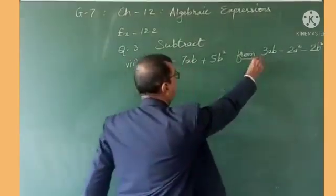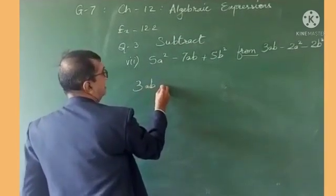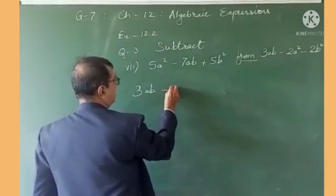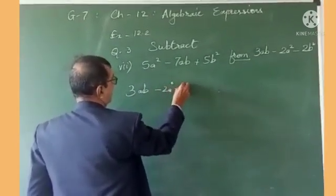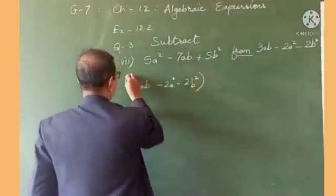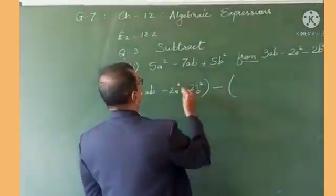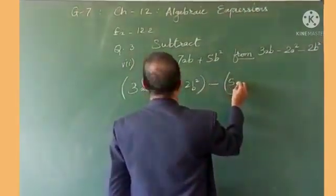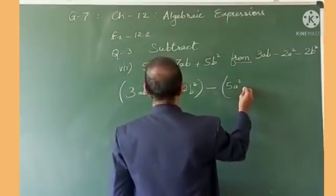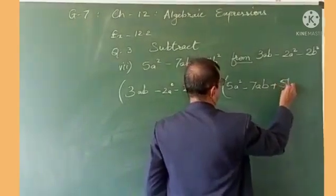So it is written here. We write 3ab - 2a² - 2b² in the first bracket, and we shall put a minus sign before the second bracket. Then we are writing 5a² - 7ab + 5b² in the second bracket.